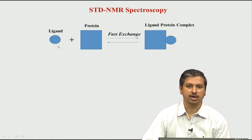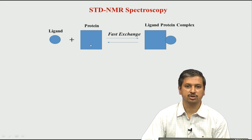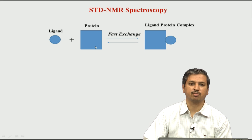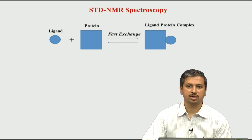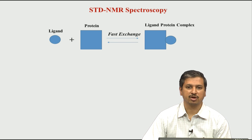This is just a schematic drawing. Imagine this is a ligand and this is the protein — the ligand binds to the protein forming a complex. But this is a fast exchange process, which means the ligand dissociates readily and goes back to the free form, then associates again, and so on. This process keeps happening a large number of times per second. There will be a rate constant for this, which we can determine using chemical exchange methods.